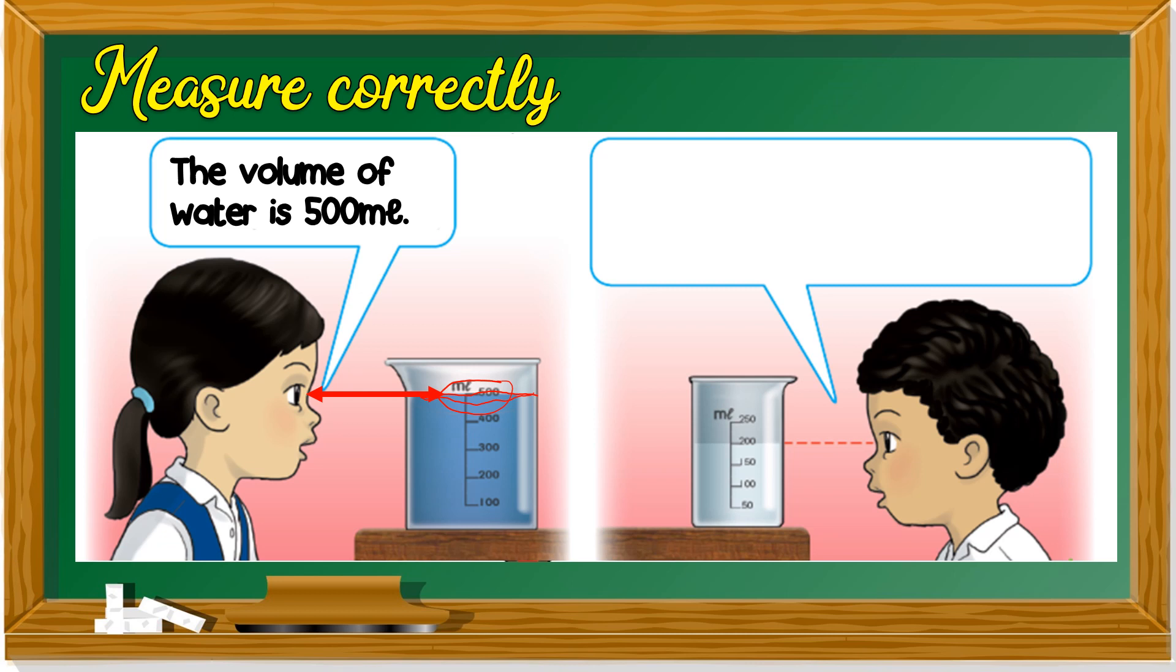How about the milk? Remember, your eye must be on the same level with the liquid. So how much is this? What's this? The level of water is here. So the volume of milk is 200 milliliter.